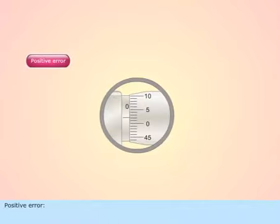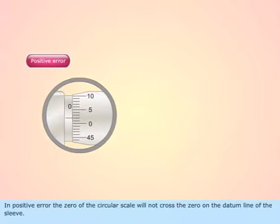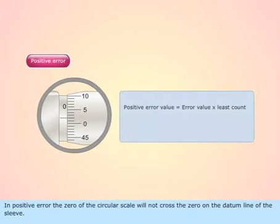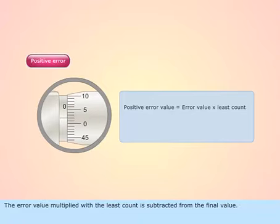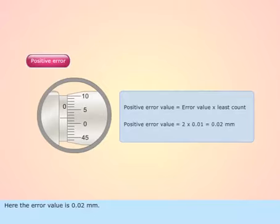In positive error, the zero of the circular scale will not cross the zero on the datum line of the sleeve. The error value multiplied with the least count is subtracted from the final value. Here the error value is 0.02 mm.